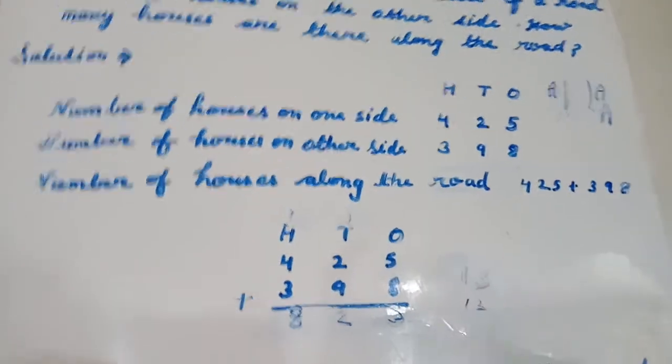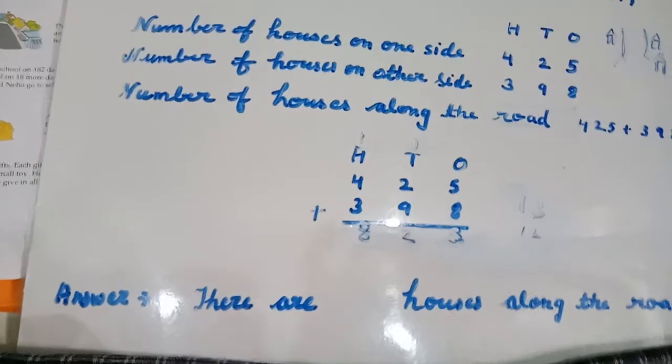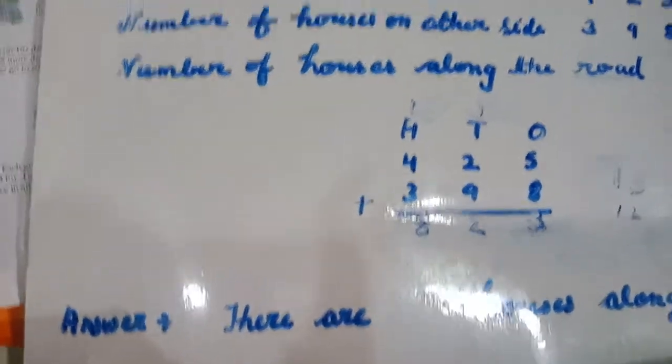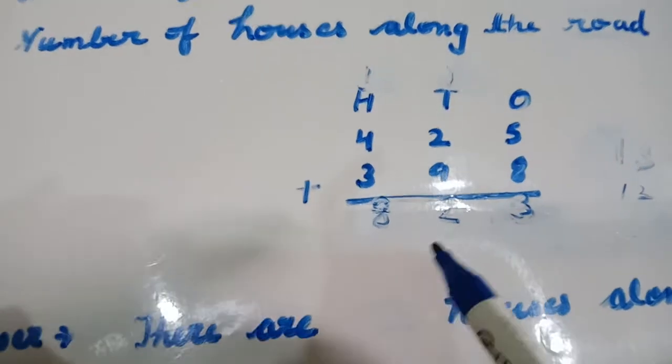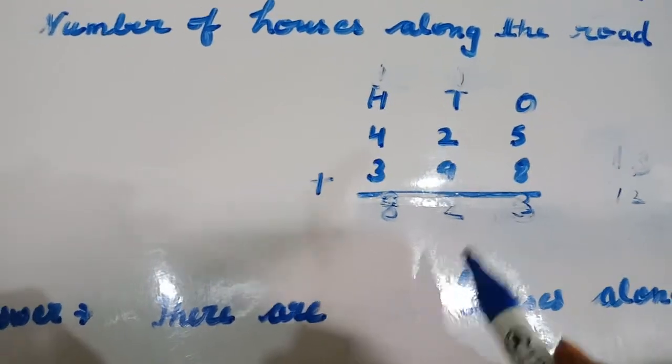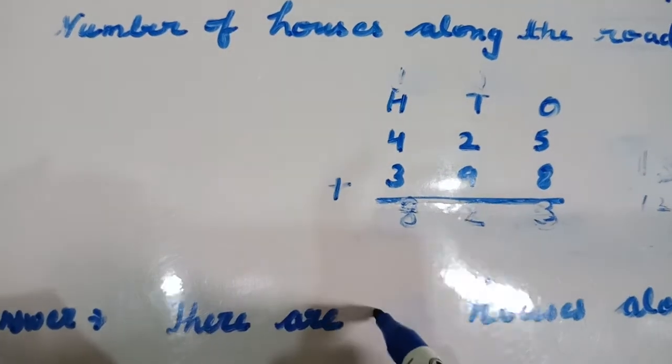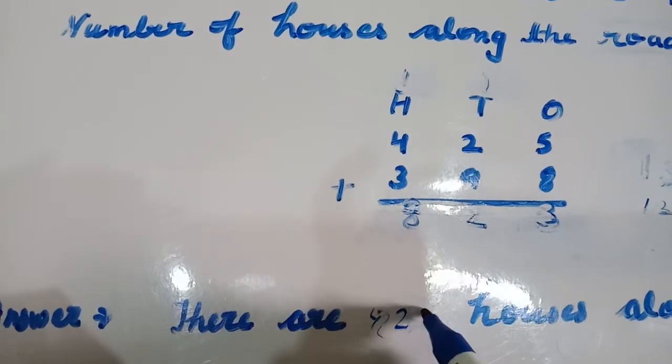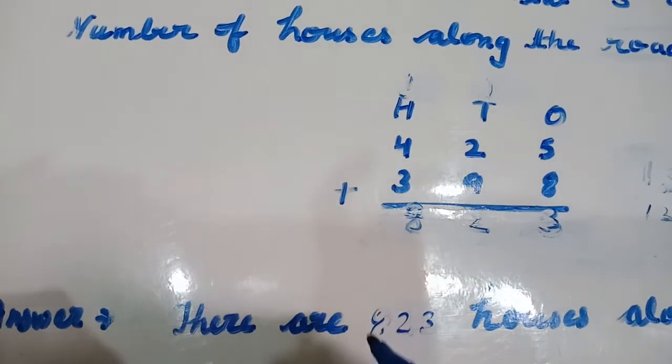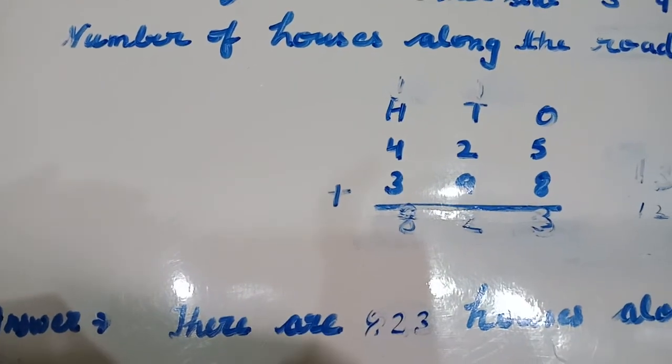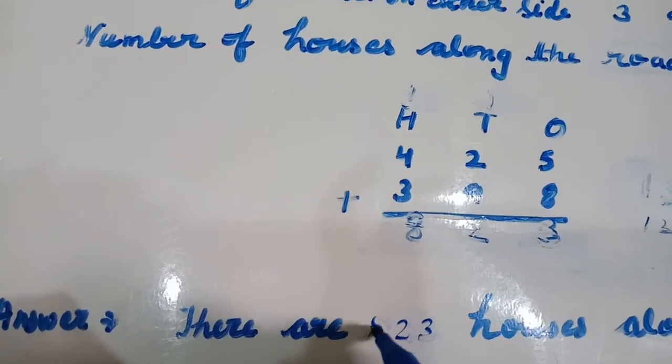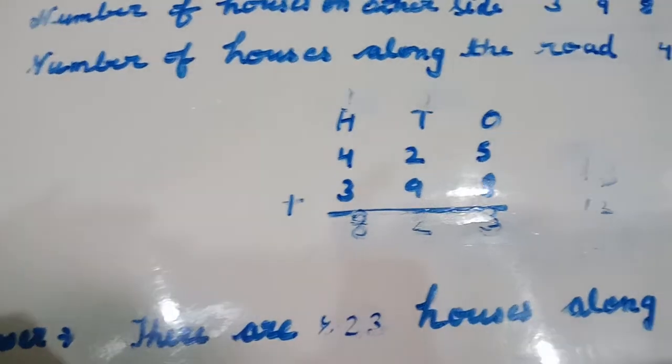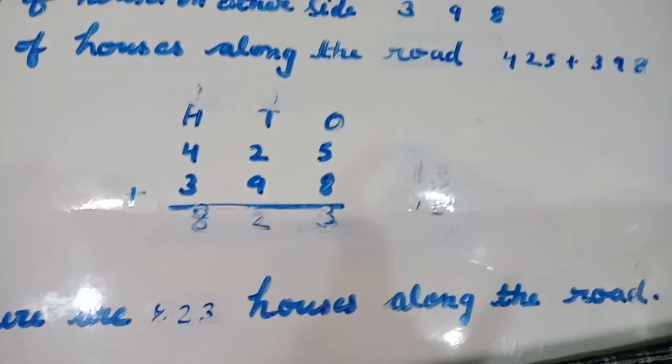Now, we will write the answer. So, our answer is there are 823 houses along the road.